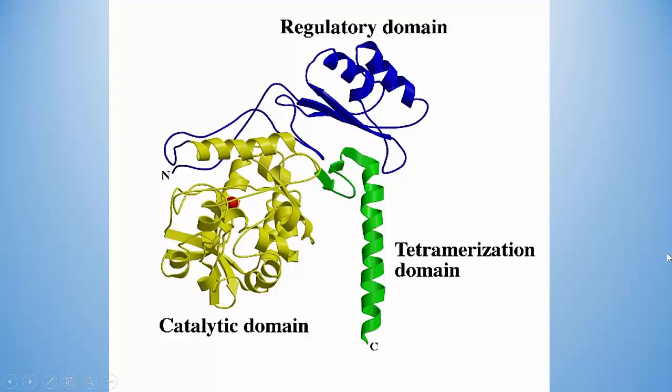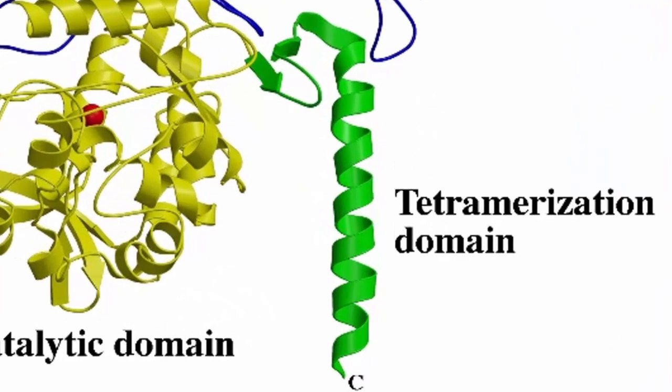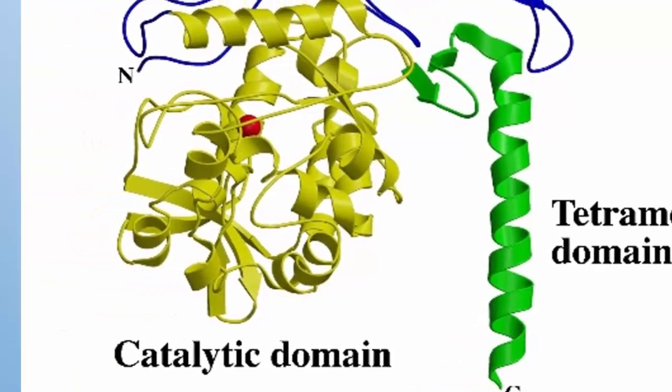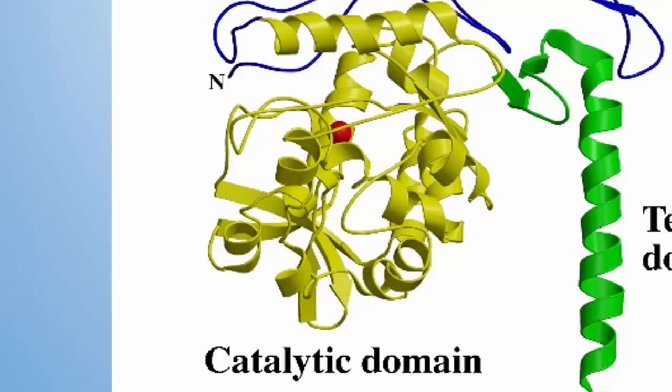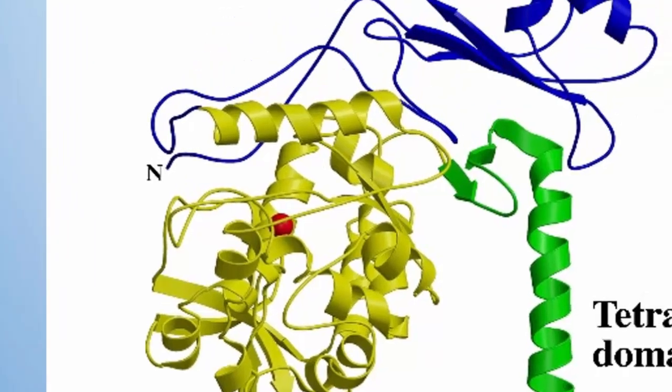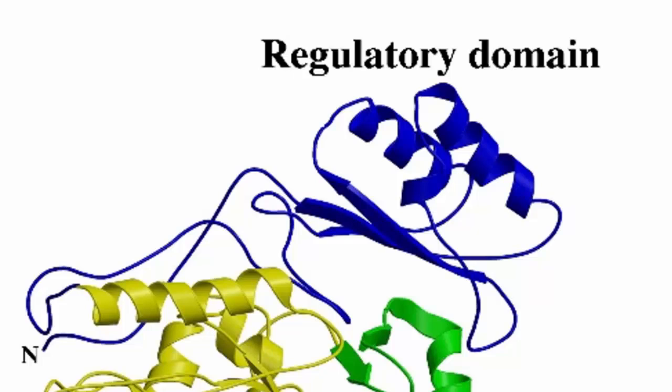To get a clearer view of where the regulatory domain is, let's look at this diagram showing the different regions of the monomeric form. The tetramerization domain, shown in green, helps the monomer join with the other monomeric units, and the end of its alpha helix contains the C-terminus. The catalytic domain, shown in yellow, is where the reaction takes place. The regulatory domain, shown in blue, contains the N-terminus and is the site of allosteric regulation, which will be discussed later.